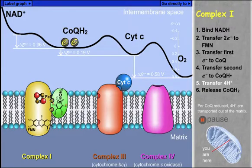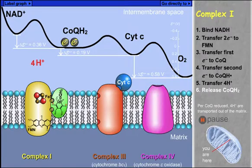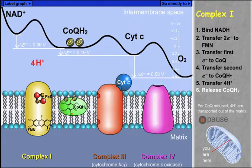During the electron transfer, in a way not fully understood, complex I also pumps four protons from the matrix to the intermembrane space. Once the electron transfer is complete, CoQH2, the fully reduced form of coenzyme Q, which is nonpolar, diffuses into the membrane.